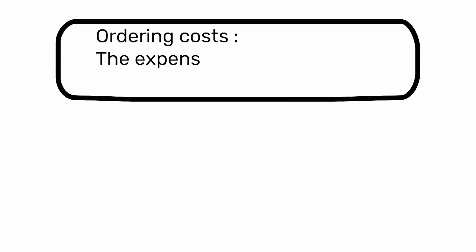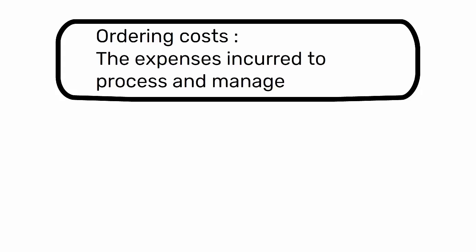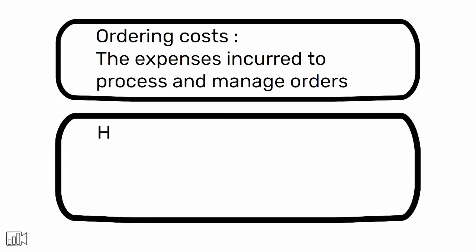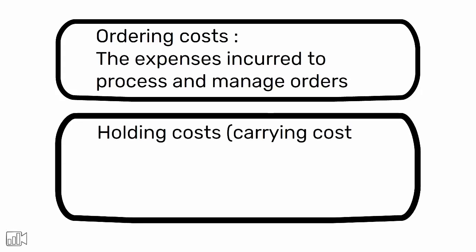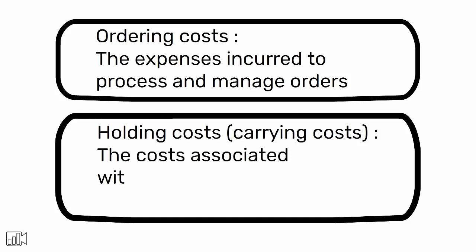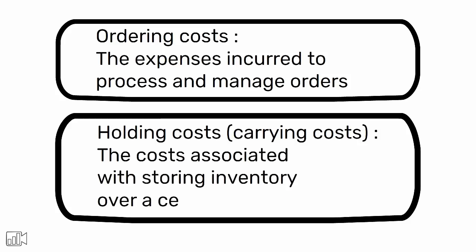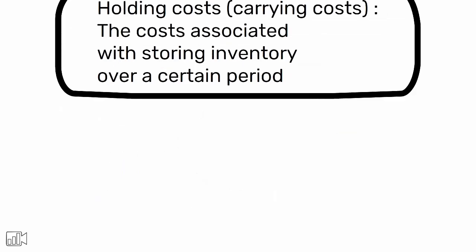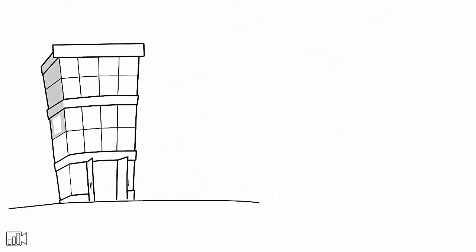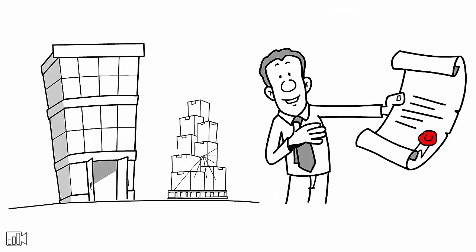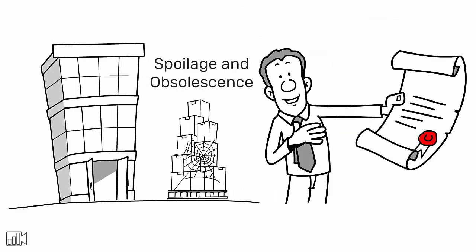Ordering costs are the expenses incurred to process and manage orders, while holding costs, also known as carrying costs, are the costs associated with storing inventory over a certain period. These can include warehousing costs, insurance, spoilage, and obsolescence.